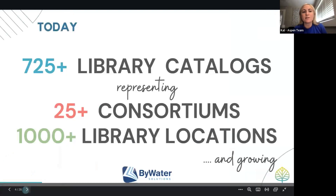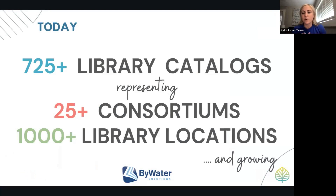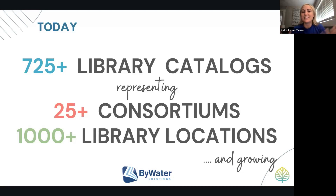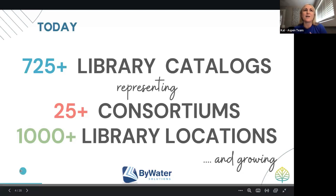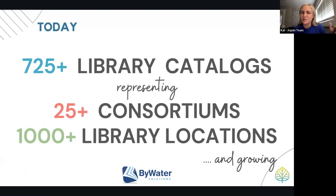Today, jumping from 2019 to now, we have over 25 consortiums that we support with Aspen Discovery at Bywater. That represents over 725 library catalogs — individually scoped catalogs with their own URLs — and over 1,000 library locations. We continue to grow. We have at least five or six consortiums currently in implementation that aren't live yet, representing an additional roughly 500 library catalogs and almost 725 locations.